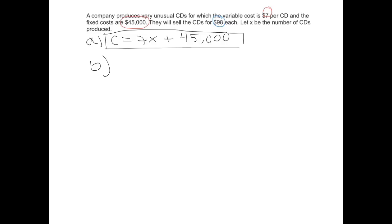And in this case, since they're selling the CDs for $98 each, that is referring to the revenue. We're going to bring in $98 per CD sold. So the revenue, which they called R, is going to equal $98 times X, again because that's how many CDs we're talking about selling.